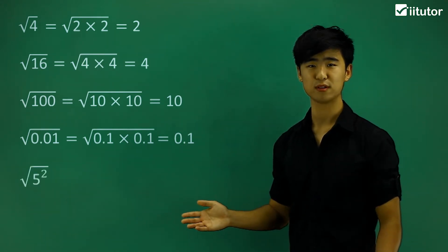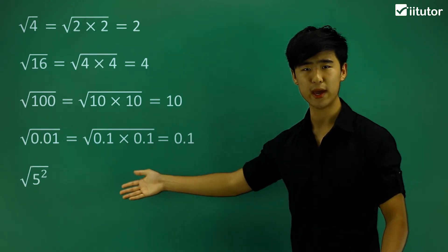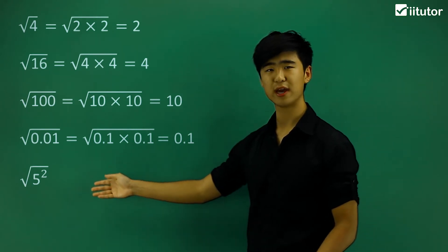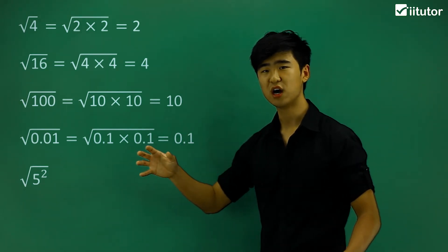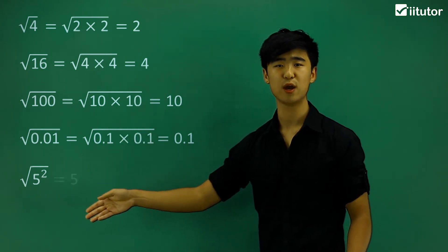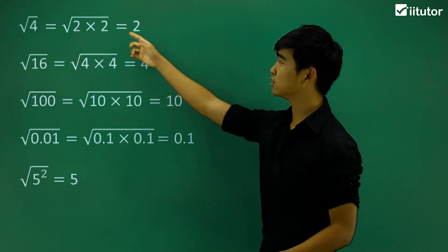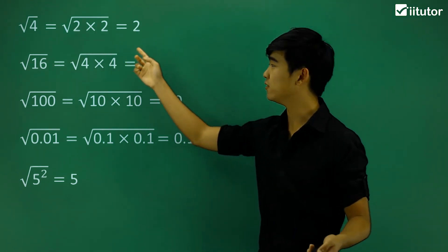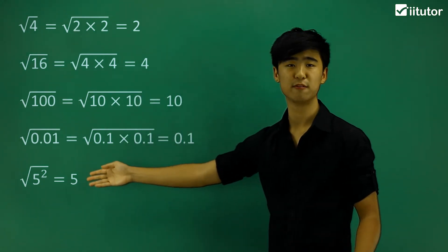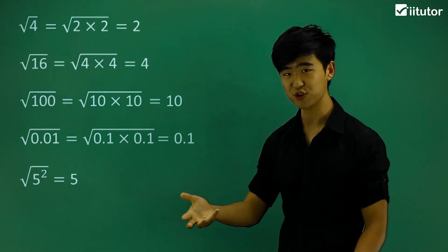Let's look at one more concept. We have the square root of 5 squared. The square root and the square are kind of opposite in nature, so we can just cancel out straight away, and we're left with just 5. If you look at what we've been doing — that's just 2 squared, 4 squared, 10 squared, and so on. So here, straight up, it's 5 squared — the square root of that, we cancel out the square and the square root, and we're left with 5.